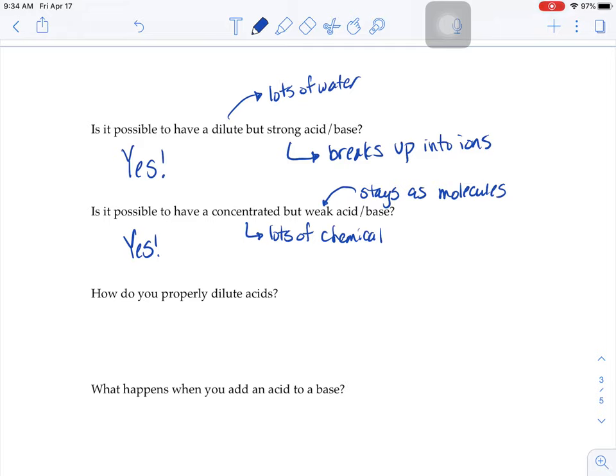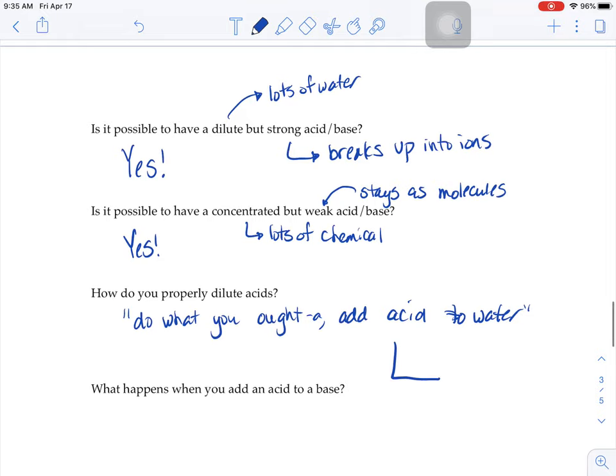There is a little phrase that if you want to make a dilute acid, there's a funny little poem. Do what you ought to add acid to water. It works better if you say it with like a Boston accent there. Do what you ought to add acid to water. That if you want to dilute a chemical, usually you just dump extra water in. But if you start with an acid and just dump water into that chemical, it could release a whole bunch of heat energy and it could actually shatter the glassware that you're putting it in. So if you want to dilute an acid, you want to put the water in the beaker first and then add the acid to it. That's the safe way.